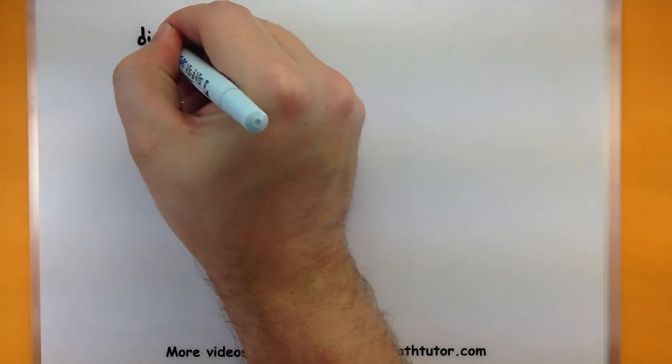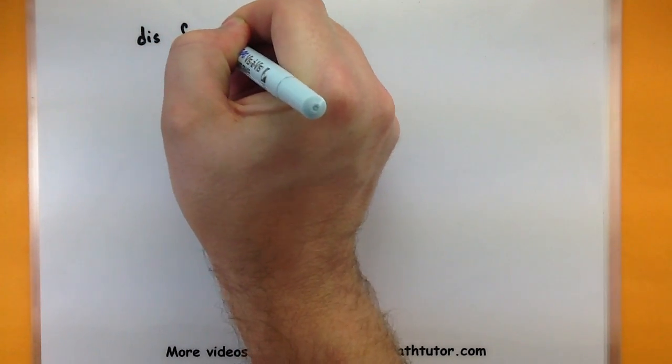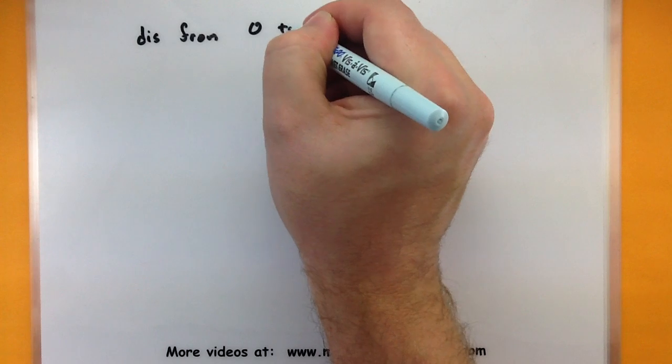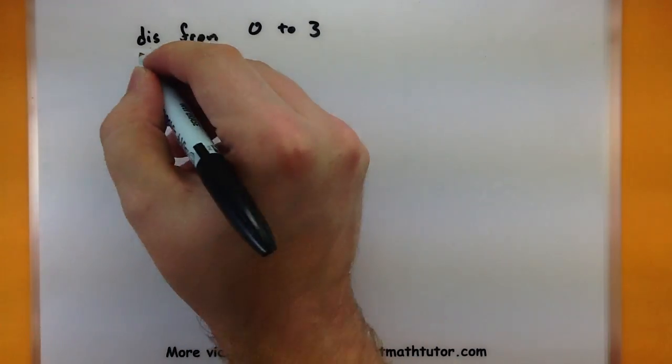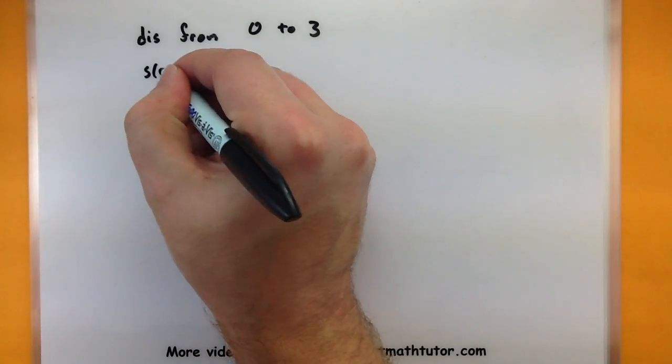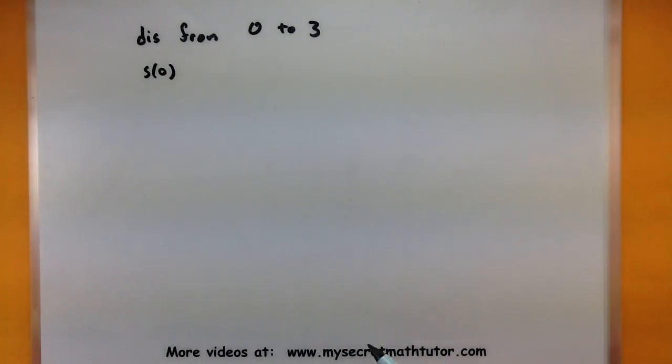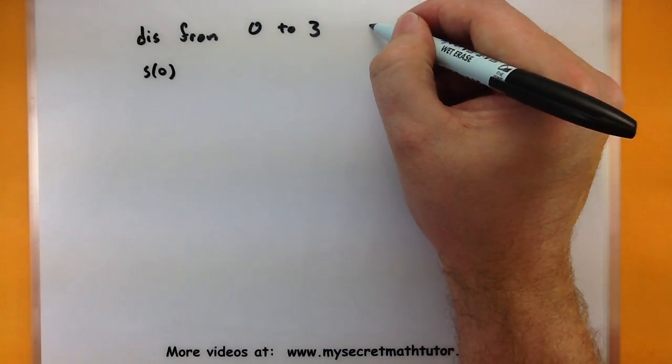Alright, so let's start off with the distance from 0 to 3. To figure out that distance, we can just simply use our position function at time 0 and time 3. So imagine plugging 0 into your position function. I guess we better write it down if we're going to use it. So that's t³ - 12t² + 45t.